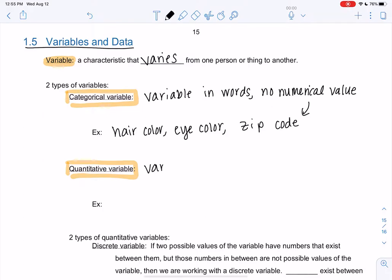Quantitative is a variable with a numerical value. So lots of examples: age is a number, height, shoe size, anything that could be a number where the number has like a number meaning.